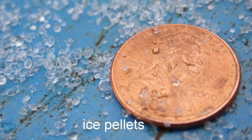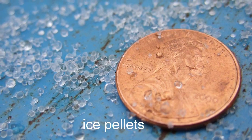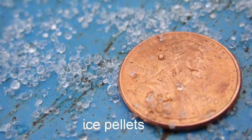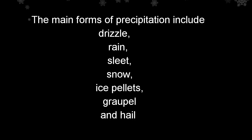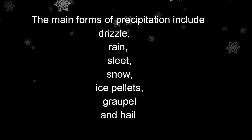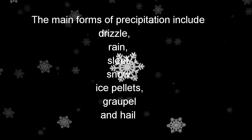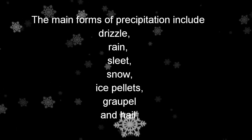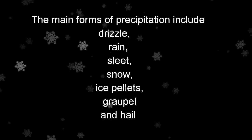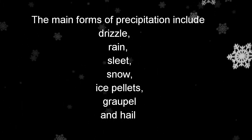Precipitated translucent balls of ice are called ice pellets. Drizzle, rain, sleet, snow, ice pellets, graupel, and hail are the main forms of precipitation.